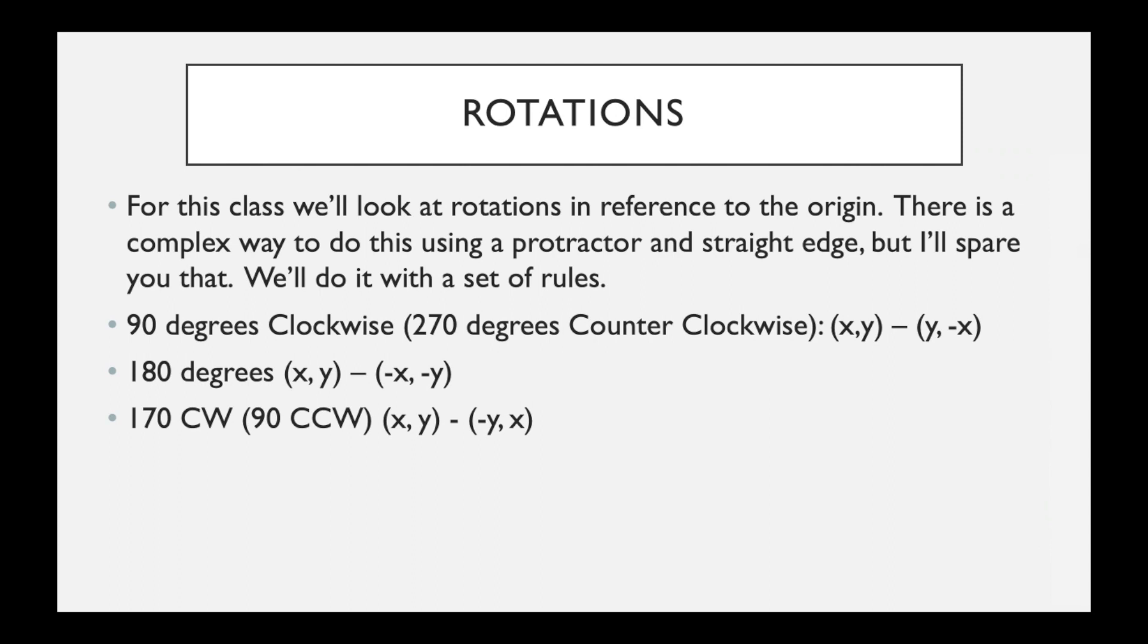Oh, that's supposed to be 270. A 270 degree clockwise rotation or a 90 degrees counterclockwise. That's how you can abbreviate those: CW for clockwise, CCW for counterclockwise. That'll take any point (x,y) and turn it into (-y, x). So for example, if we have that point (2, 4) again, it's going to become (-4, 2).